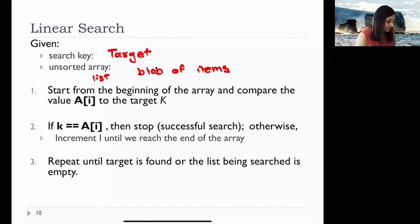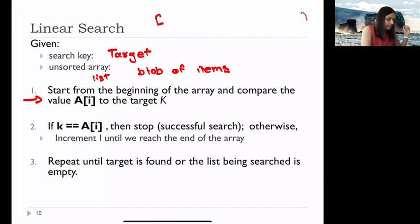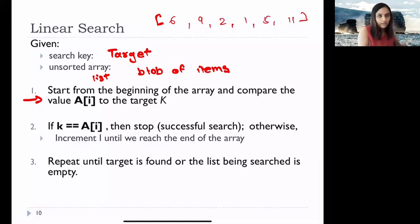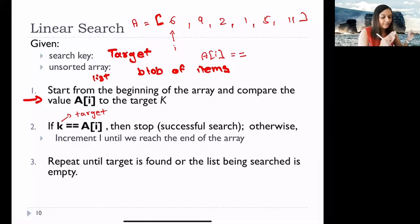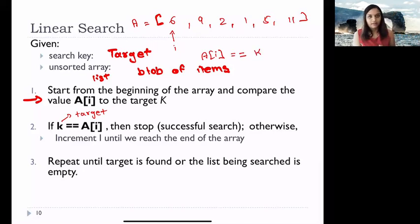What does a linear search do? It starts from the beginning of the array and compares the value at index i. If the array A has items like 6, 9, 2, 1, 5, 11, linear search starts from the beginning and compares: if A[i] equals the target k, then it returns the index i where the item was found.